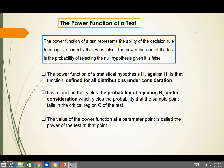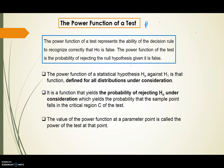The power function of a test represents the ability of the decision rule to recognize correctly that H0 is false. The power function of the test is the probability of rejecting the null hypothesis given it is false. So the function is called the power function if we have the probability of rejecting H0 when H0 is false.